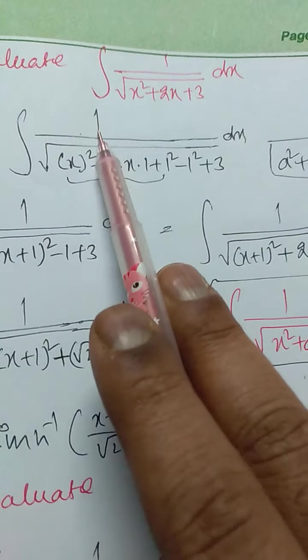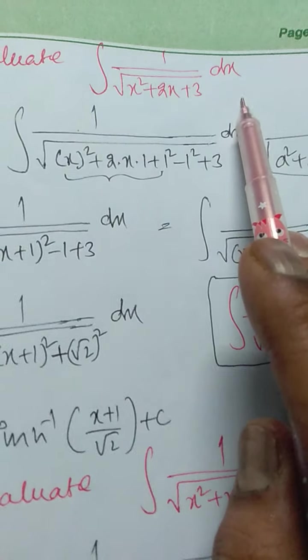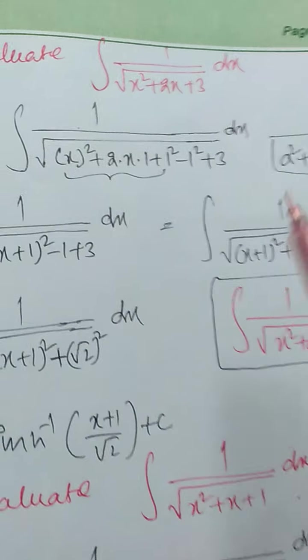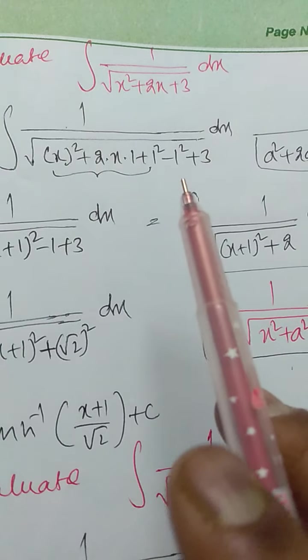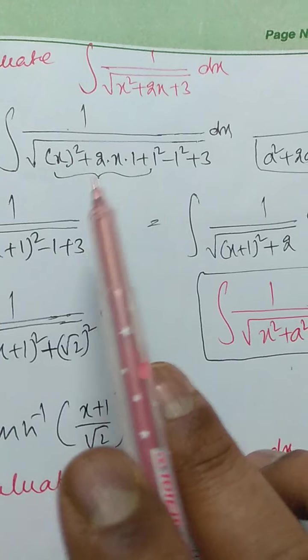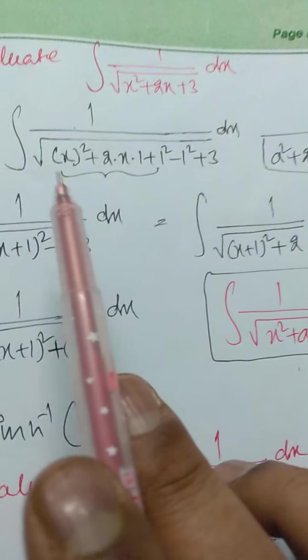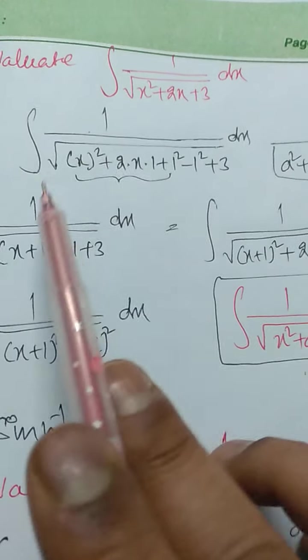This is in the form of integration of 1 by root of ax squared plus bx plus c, dx. So we have to convert the denominator value into sum of squares.